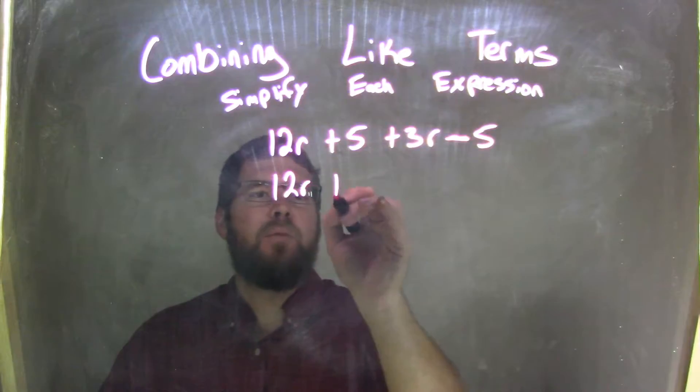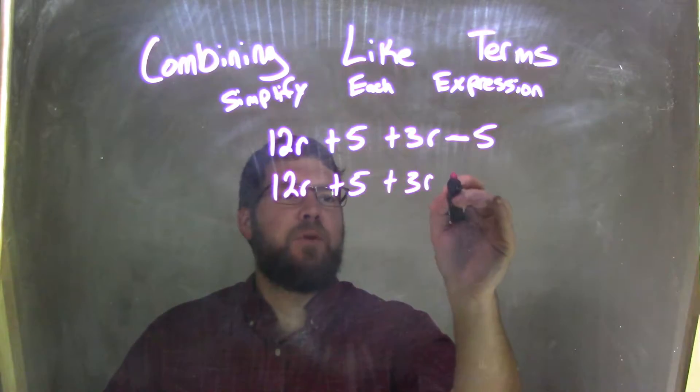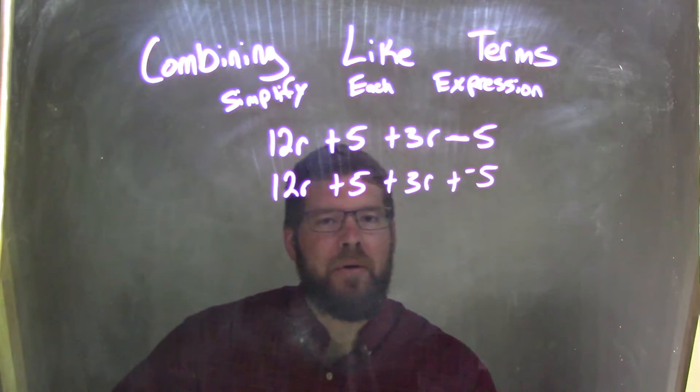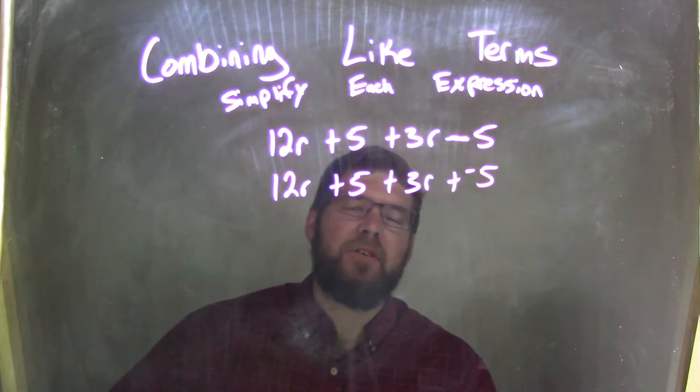So I have 12r plus 5 plus 3r, and this one will be plus negative 5. Now, I know some people will disagree with me on that one. That's fine. There's many ways to solve this problem.